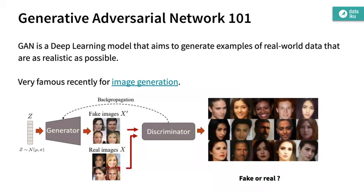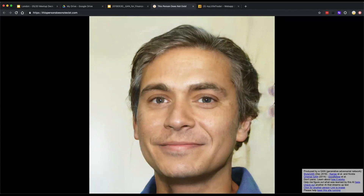This technique really originates from image generation. Another good example — which is slightly scary — is this website where this person is fake. It comes from a neural network's understanding of what a human face looks like, but there's no one who exactly looks like this.